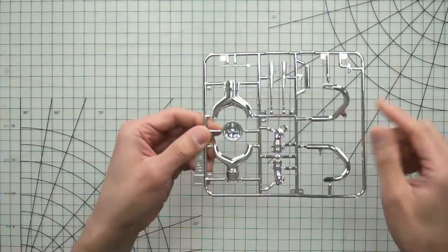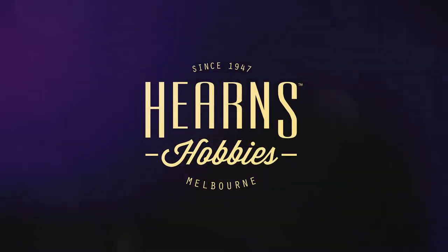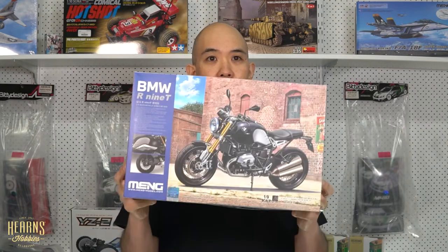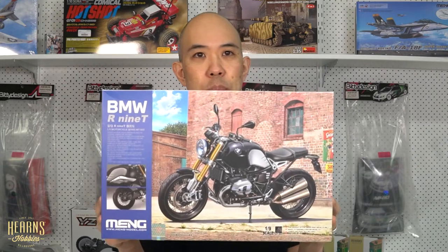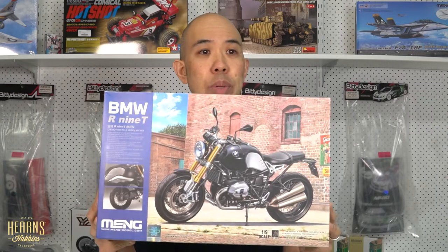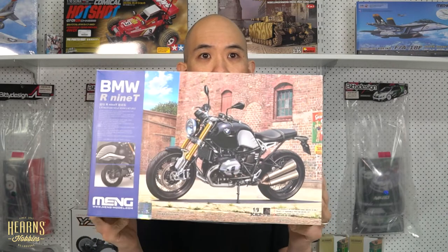So if you're into a real challenge of building and like something a little bit bigger, this is a really nice kit for you. Hello, this is VJ from Herne's Hobbies and I'm going to be looking at this today. It's quite a nice Meng kit, 1/9 scale of the BMW R9T.